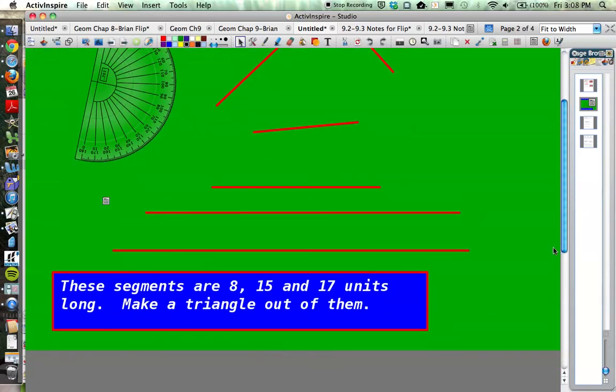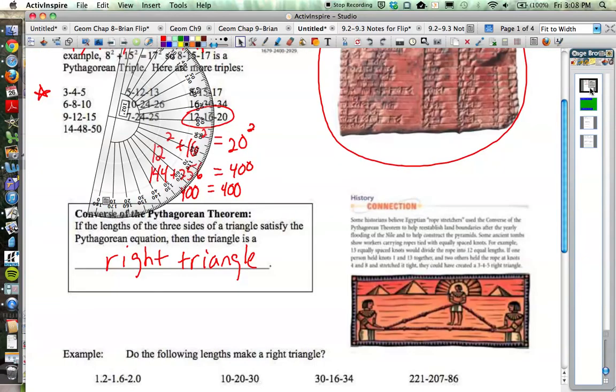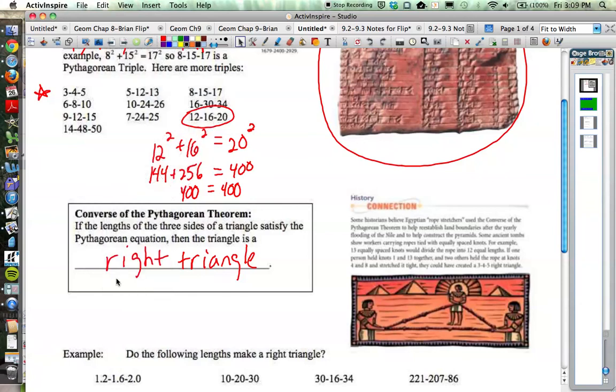The same thing is true with these segments that are 8, 15, and 17 units long. We could go through that investigation and make a triangle out of these three segments, and you would find the only way you can make a triangle out of them is if that triangle turns out to be a right triangle. And that really is the application, or the example, of the converse of the Pythagorean theorem.